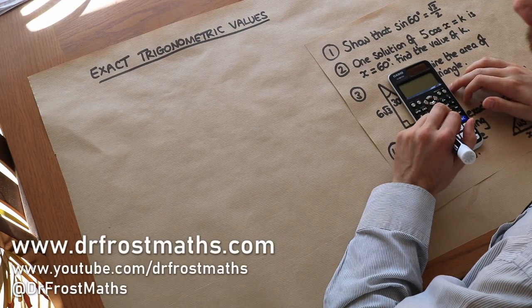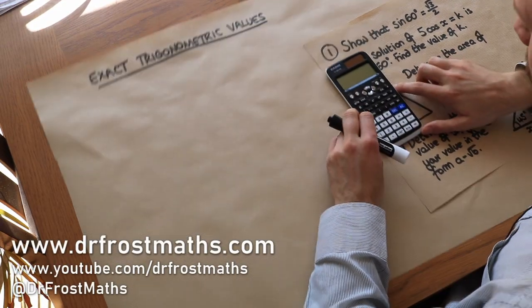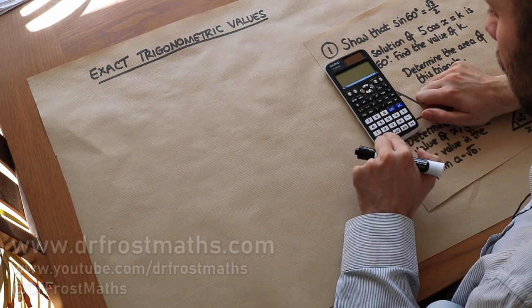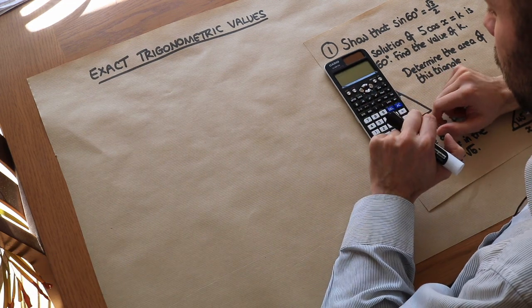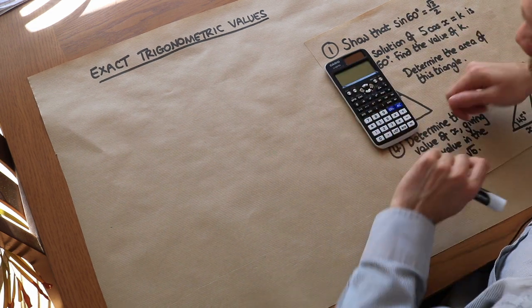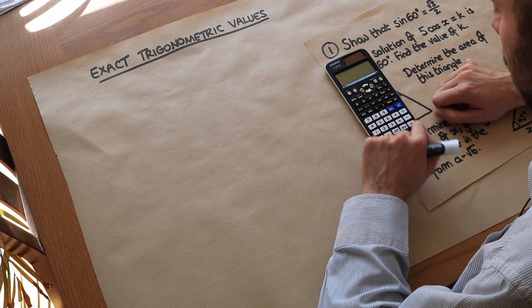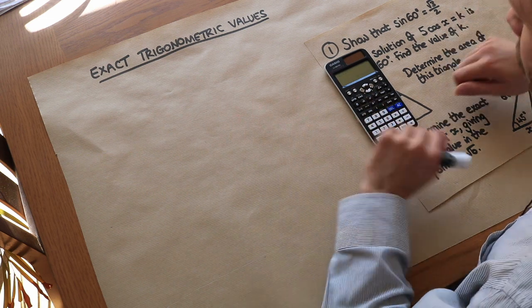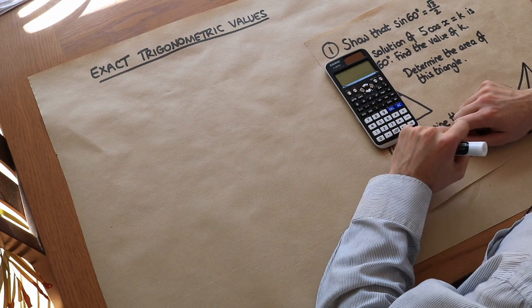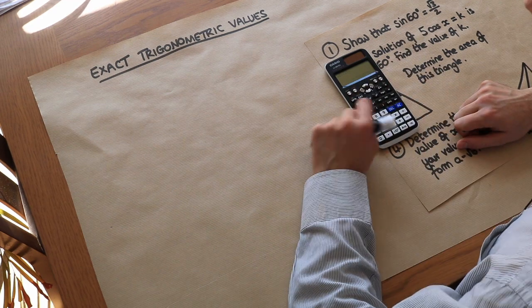Hello and welcome to this video on exact trigonometric values. Suppose you put into your calculator sine of 30 degrees — you get a nice value: 0.5. But if you try sine of 47, you get 0.73135. So it seems that sine, cos, and tan of certain angles give you nice values.